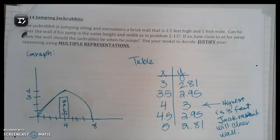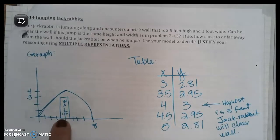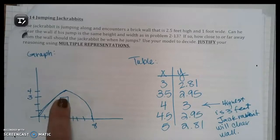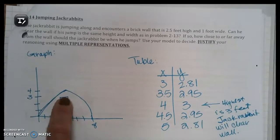Can he clear the wall if his jump is the same height and width as in problem 2.13? If so, how close to or far away from the wall should the jackrabbit be when he jumps? Use your model to decide. Justify your reasoning with multiple representations. Okay, so the wall is one foot wide, so I made it go from 3.5 to 4.5 because that puts the middle of it right at 4 feet, right? And then the top of the wall, the top of the wall was 2.5. I wrote, make sure I write 2.5.